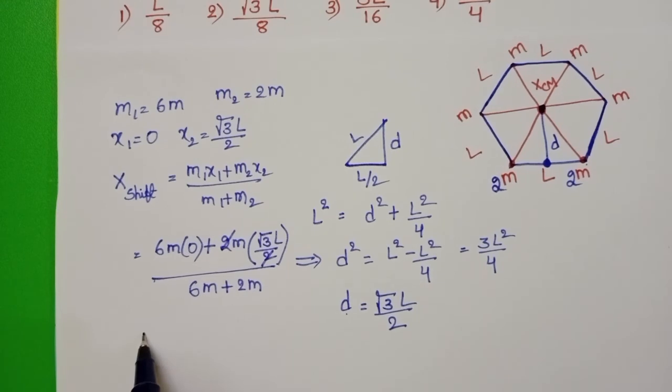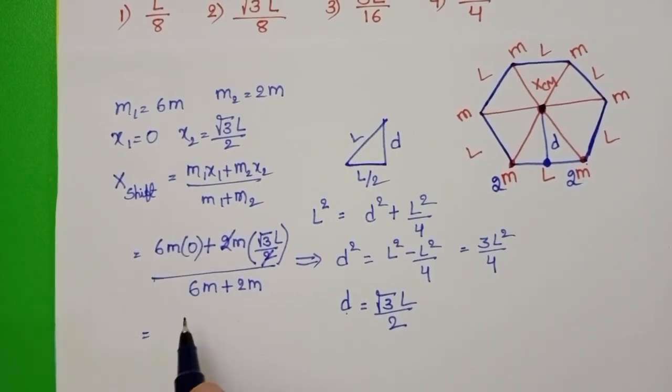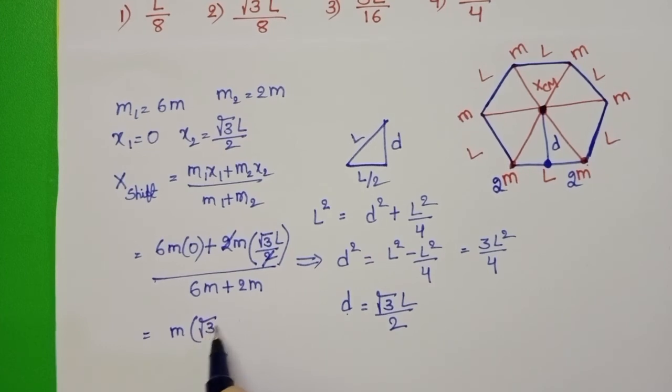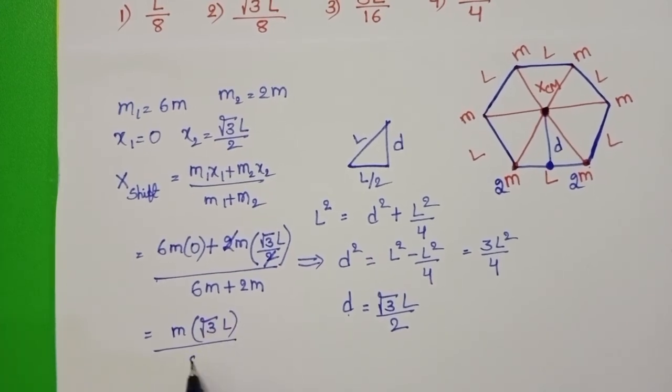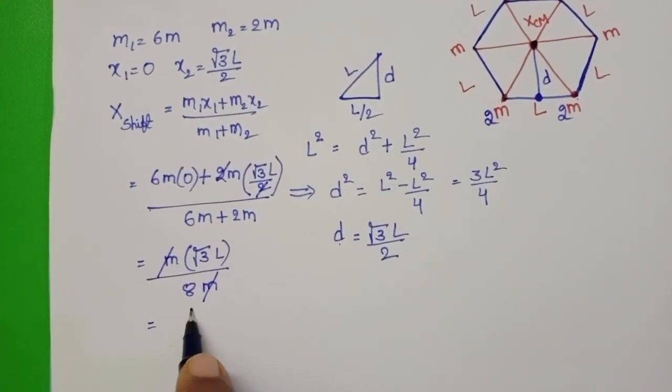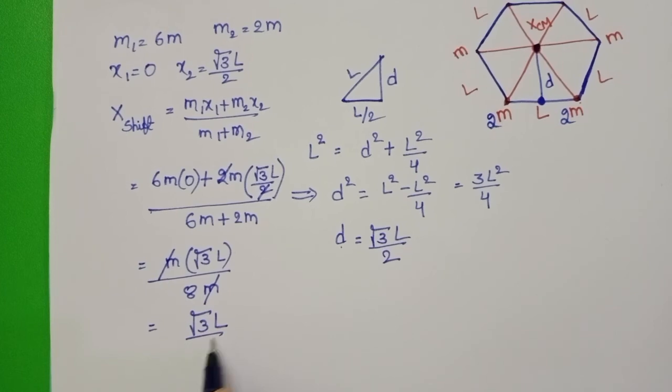Here 2 gets cancelled. First term is 0, so x equals M times √3 L divided by 8M. M and M get cancelled, which equals √3 L/8.